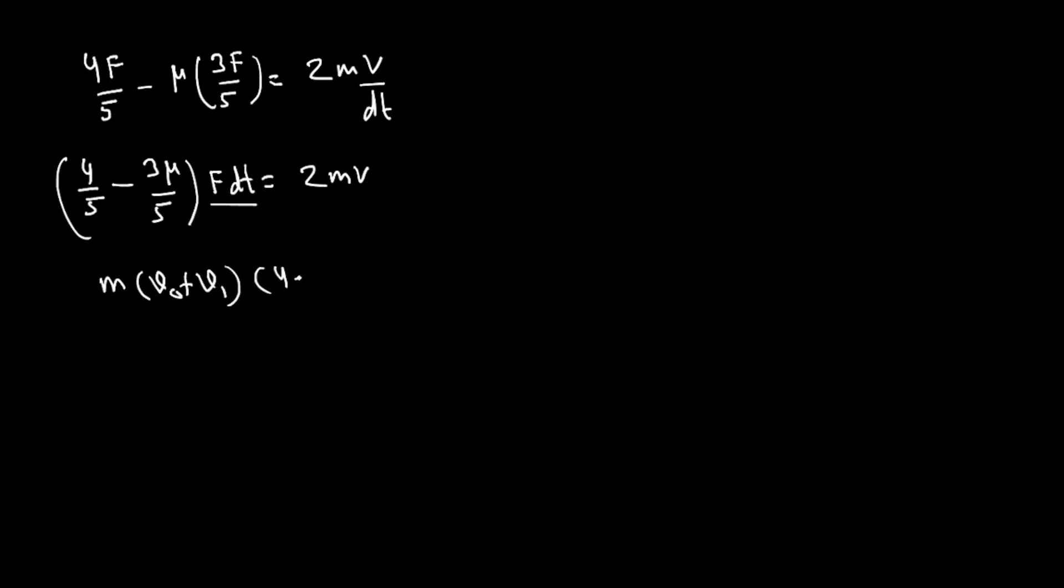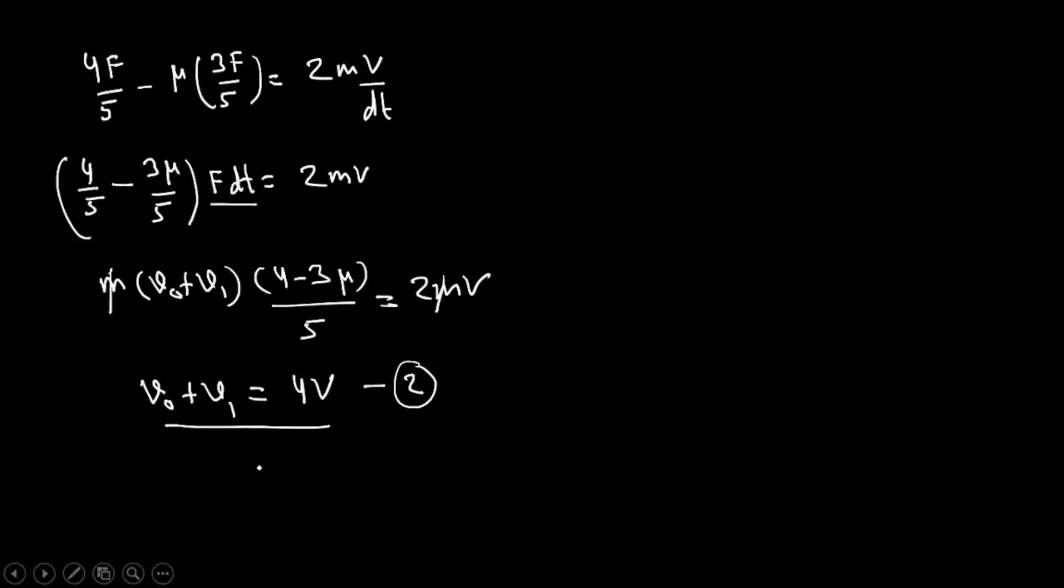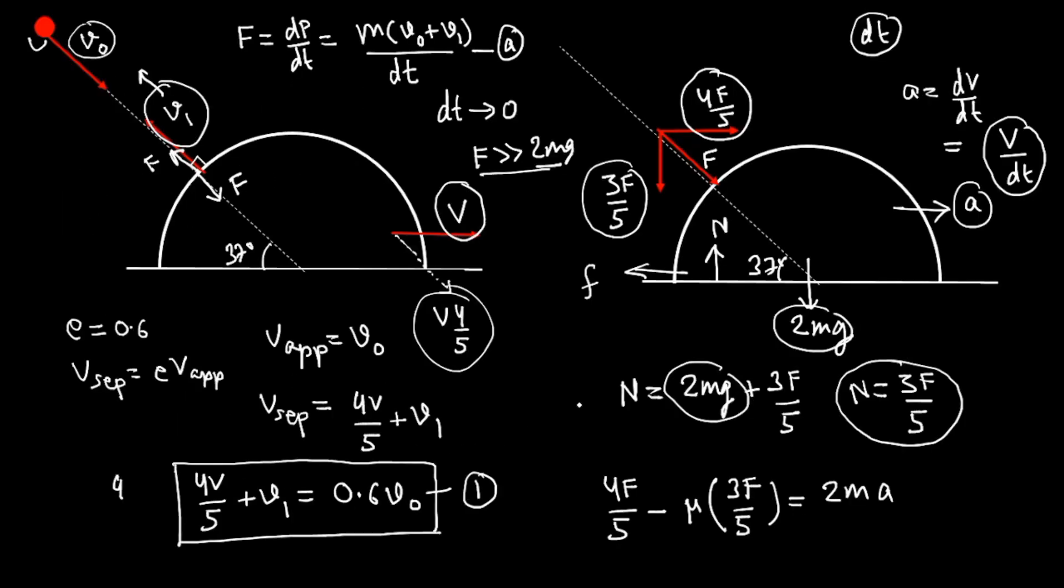So m(V₀ + V₁) × (4 - 3μ)/5 = 2mV. If you do all the cancellations and put the values, you get V₀ + V₁ = 4V. This is equation 2, and in the previous slide we got equation 1. V, V₁, and V₀ are related. If you solve and put the values, you get the final velocity V = 5 m/s. So the hemisphere starts moving with velocity 5 m/s immediately after the collision.